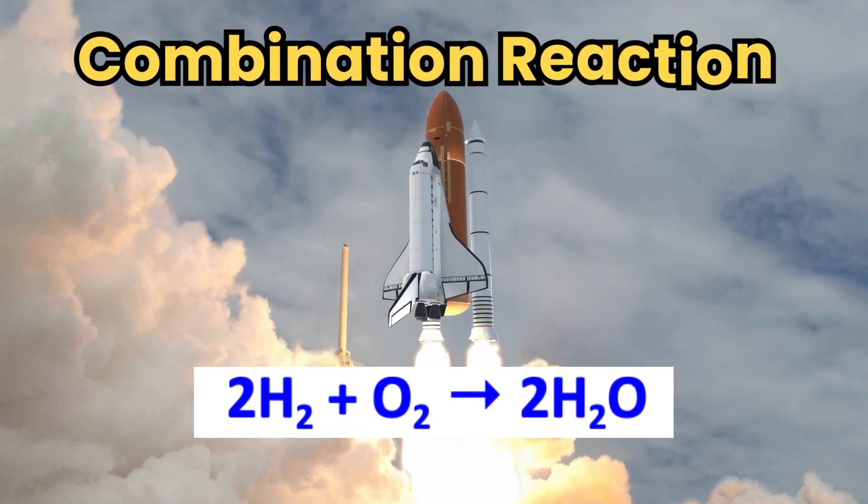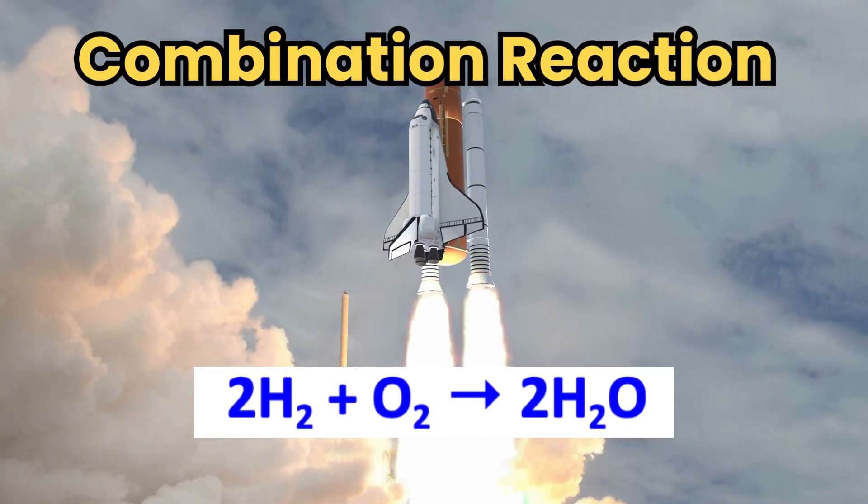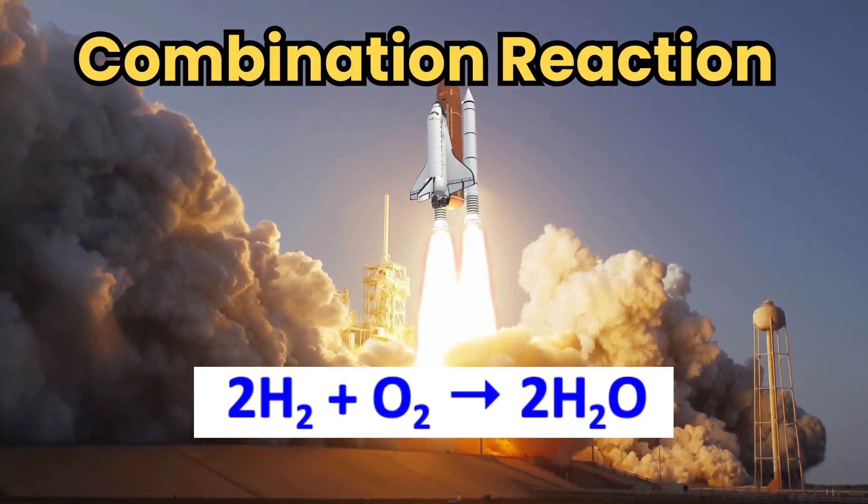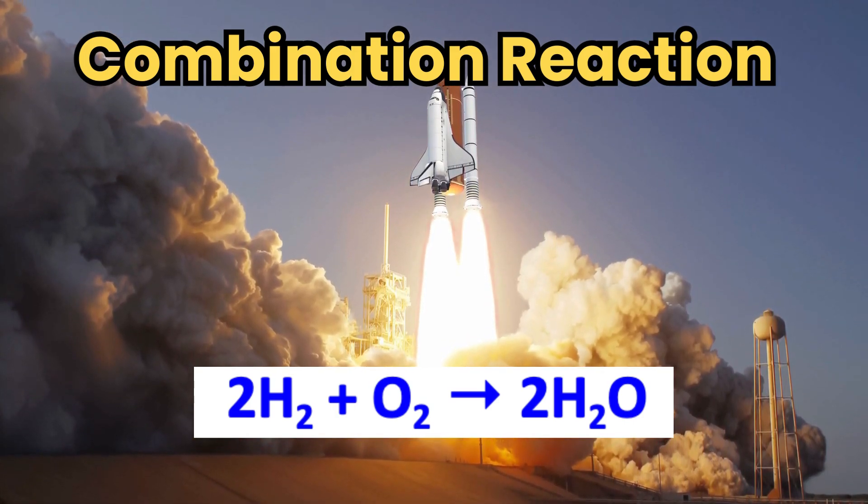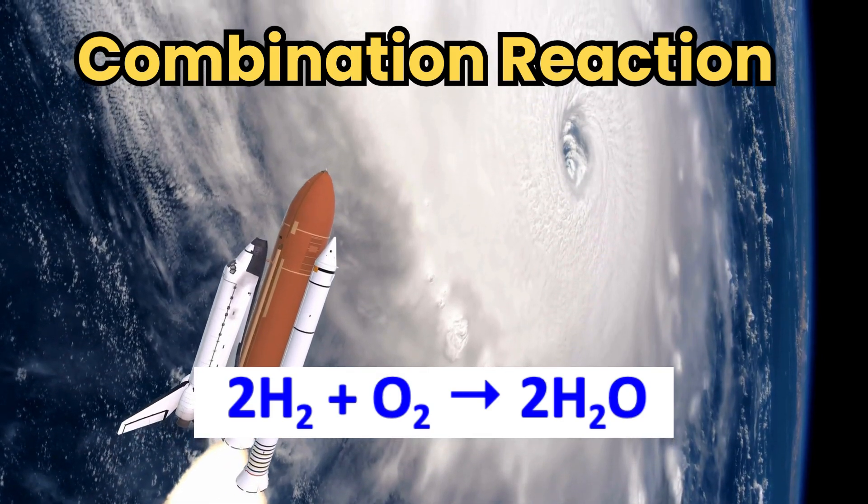An example is 2H2 plus O2 gives 2H2O. Liquid hydrogen and liquid oxygen combine to produce a new substance, water vapor, releasing energy in the process to propel the rocket.